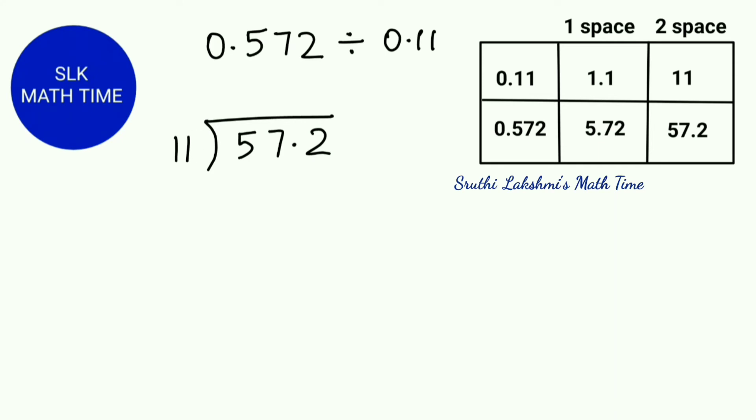So 11 times... since 5 is not divisible by 11, we put a 0. So 11 times 0 is 0. So we do 5 minus 0, which is 5. Next, we bring down 7.